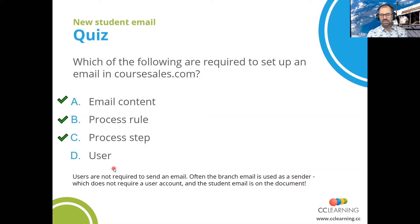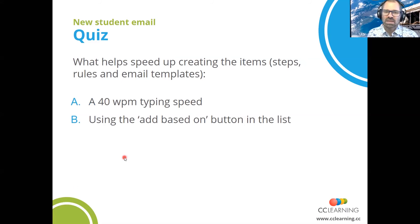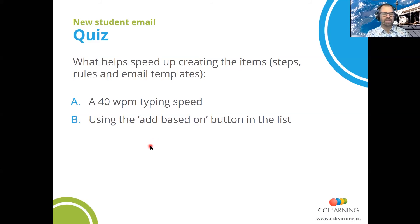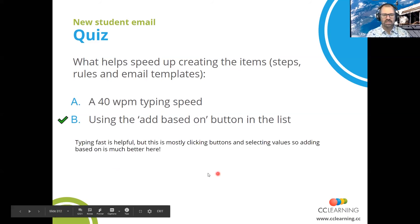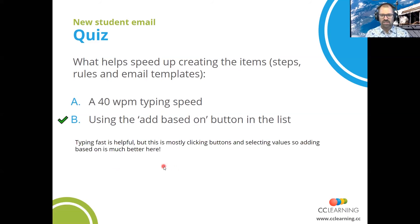If you have the basic license, you're restricted to one user, so you may want to set up someone with admin to receive that email and then forward it on. Next question: what helps speed up creating the items — steps, rules, and email templates? Do you need 40 words per minute typing speed, or just use the 'Add Based on' button? The answer is B — using the 'Add Based on' button. Typing fast is helpful, but this is mostly clicking buttons, and using 'Add Based on' is much better here.